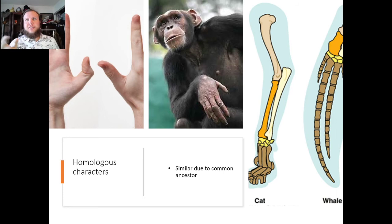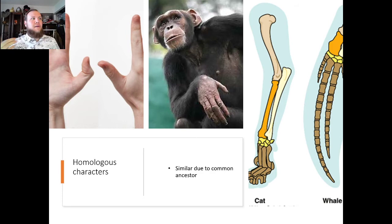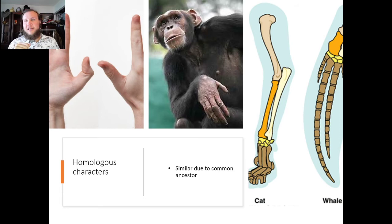Homologous characters, such as hands shown here, are similar due to a common ancestor. All mammals have five digits, though in some they have been fused — such as horses, where five digits have been fused into one. We can see how a chimp hand is similar to our hand because we have a common ancestor. Similarly, we have five digits like a cat because we share an early common mammalian ancestor.